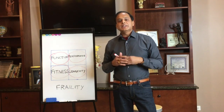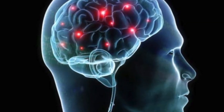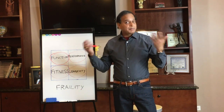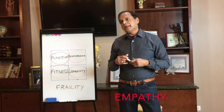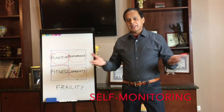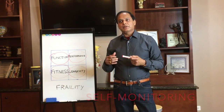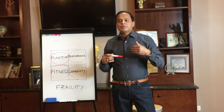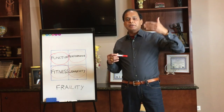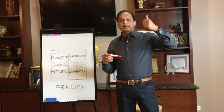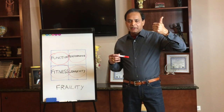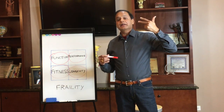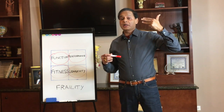Let's talk about the psychological functions we can see declining: judgment, impulse control, empathy, and self-monitoring. These are some of the functions on a psychological level. To summarize, functions can occur at various levels — at a physical level, a physiological level, a psychological level, and a cognitive level.